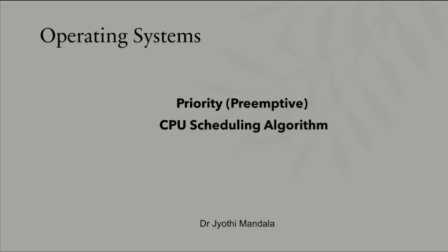We already learned about priority CPU scheduling algorithm where we considered priority as non-preemptive. I'll just quickly revise how we have done it. In non-preemptive, once a process has been assigned to a CPU, until and unless it completes its execution, it will not release the CPU. We learned about FCFS, SJF which are non-preemptive, and also round robin and SRTF which are preemptive.